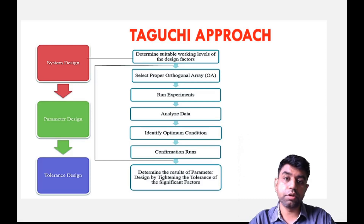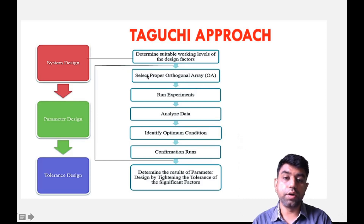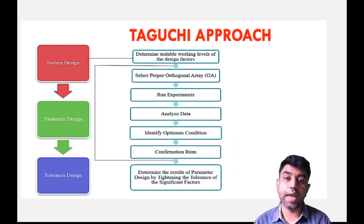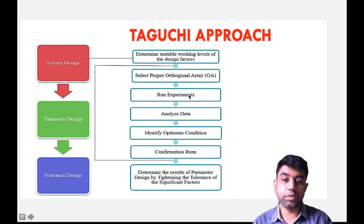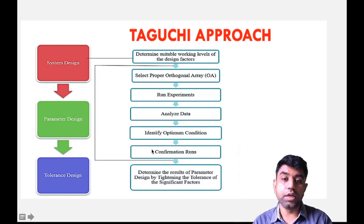After system design you go for parameter design, which is important. You prepare an orthogonal array — the table we formed is also called an orthogonal array — and for this orthogonal array we use a fractional factorial design so that we don't waste time and energy. Taguchi has provided statistics for this as well. First, prepare which experiments you need to perform, then perform those experiments, then analyze the data to identify the optimum condition — that is the best condition in which you get your desired result.